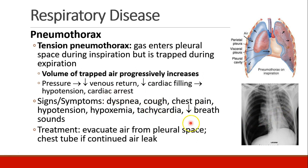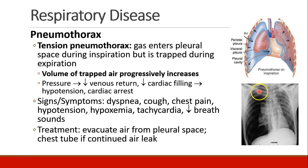Signs and symptoms of a pneumothorax might be dyspnea, cough, chest pain, hypotension, hypoxemia, tachycardia, and decreased breath sounds on the side of the pneumothorax. The treatment is to suck the air out of that pleural space to allow the lung to re-expand. If it's a tension pneumothorax, we actually stick a needle in right at the second intercostal space in the mid-clavicular line in order to relieve the built-up pressure. Then the lung needs to heal, done by evacuating air from the pleural space, and sometimes we may need to place a chest tube if there continues to be air leakage until the lung can heal itself.